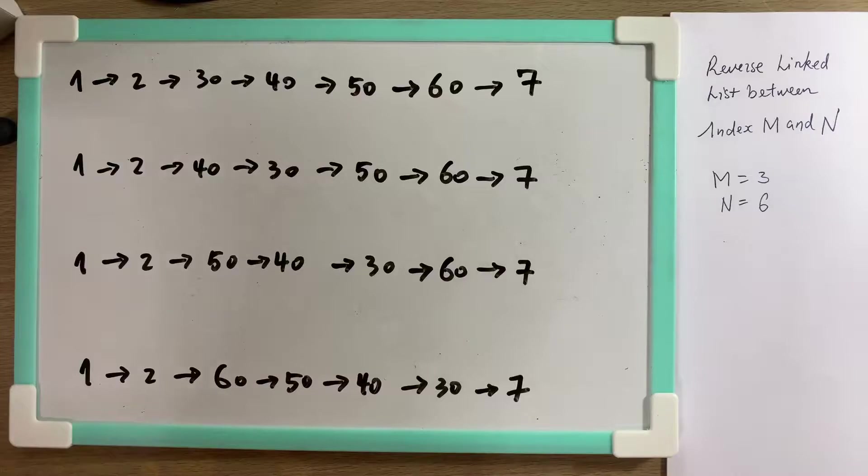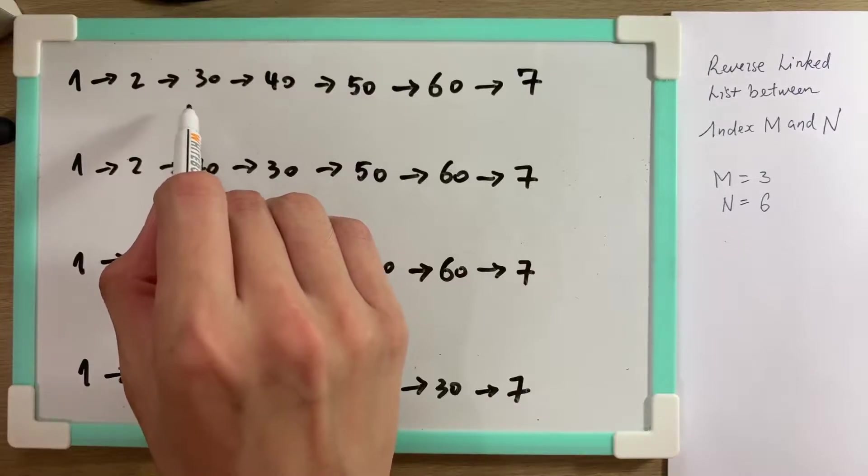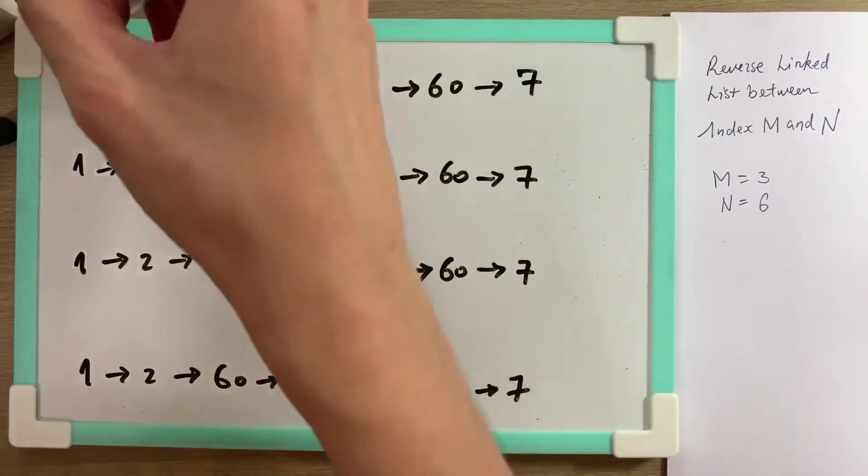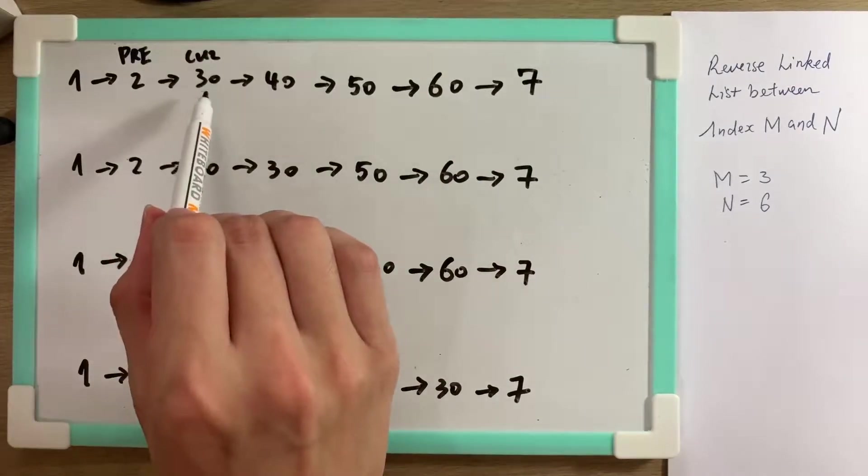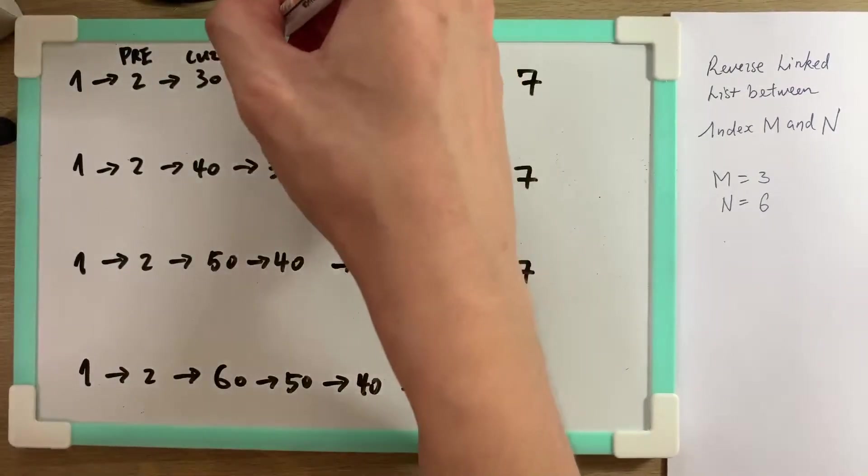To achieve this, there are a couple of things we need to know. First thing is the starting node that we need to reverse. Let's call the previous node pre and let's call it curve. And the next node, let's call it next.